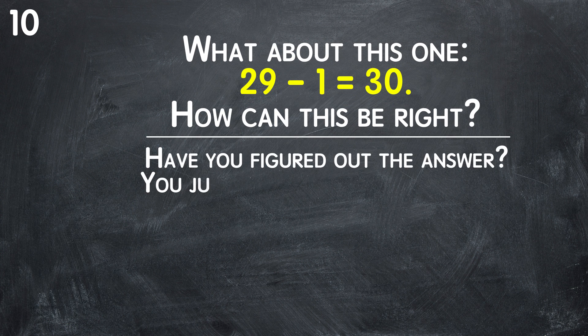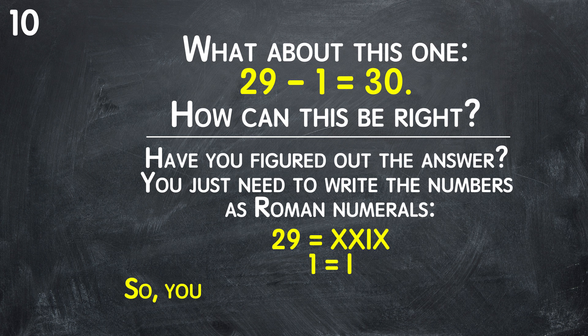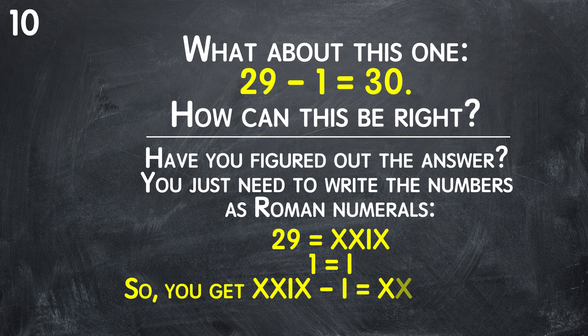Have you figured out the answer? You just need to write the numbers as roman numerals. 29 equals XXIX, 1 equals I, so you get XXIX minus I equals XXX, or 30.